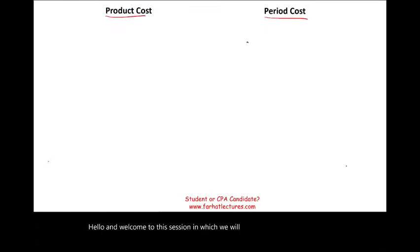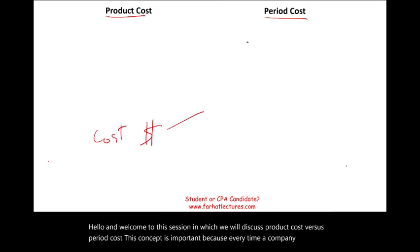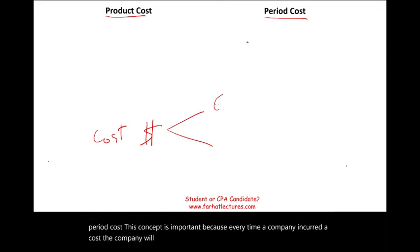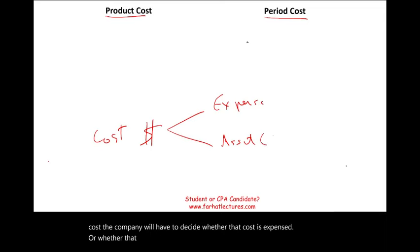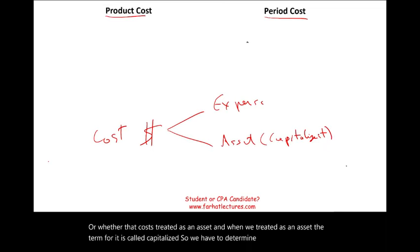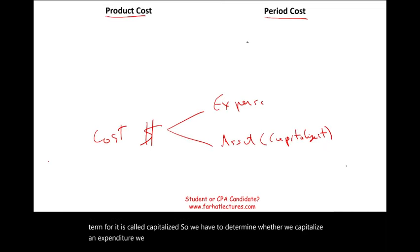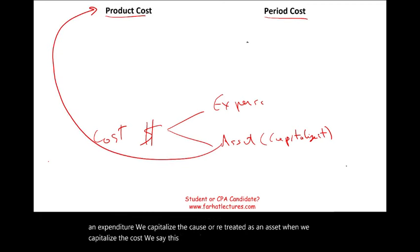Welcome to this session on product cost versus period cost. This concept is important because every time a company incurs a cost, the company must decide whether that cost is expensed or treated as an asset. When we treat it as an asset, the term for it is called capitalized. So product cost is basically when we treat an expenditure as an asset.